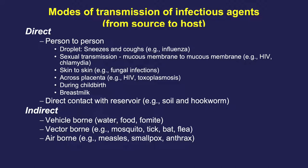Airborne transmission is also an example of indirect transmission because the agent is carried by air from an infected person before reaching a susceptible person. In the case of measles, which is an airborne viral infection, infection can occur when entering a room hours after an infected person has left, or even traveling room to room through the ventilation system. The intermediate step required for the agent to travel from source to host is what makes it indirect. Importantly, some agents can have more than one mode of transmission.